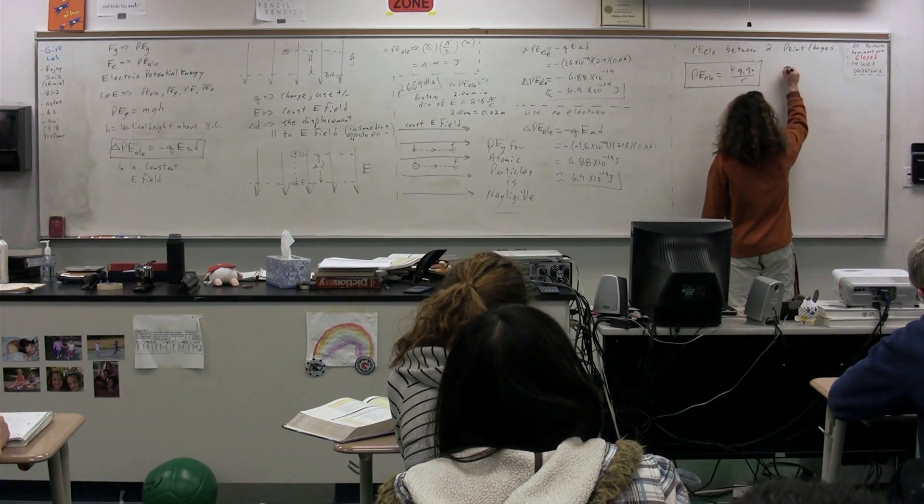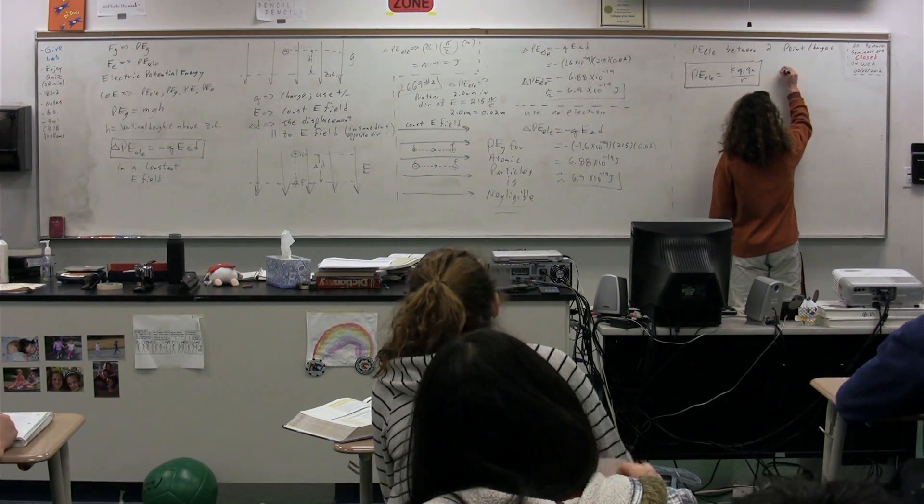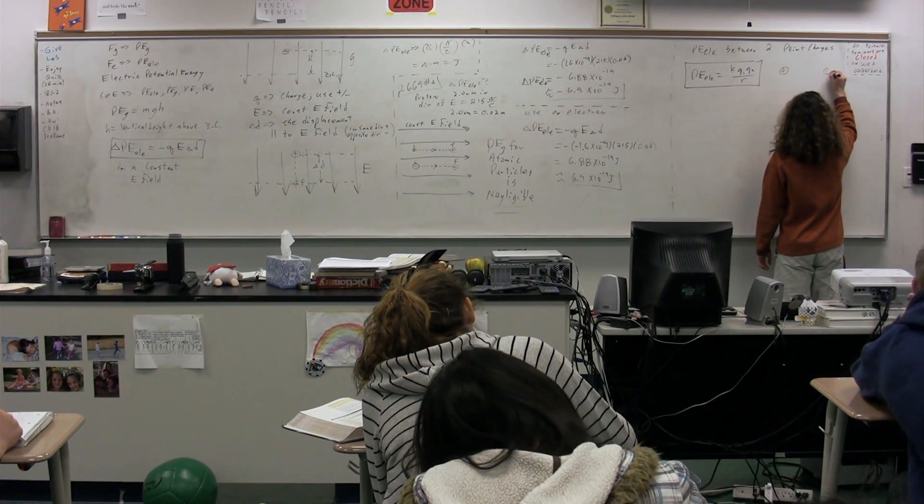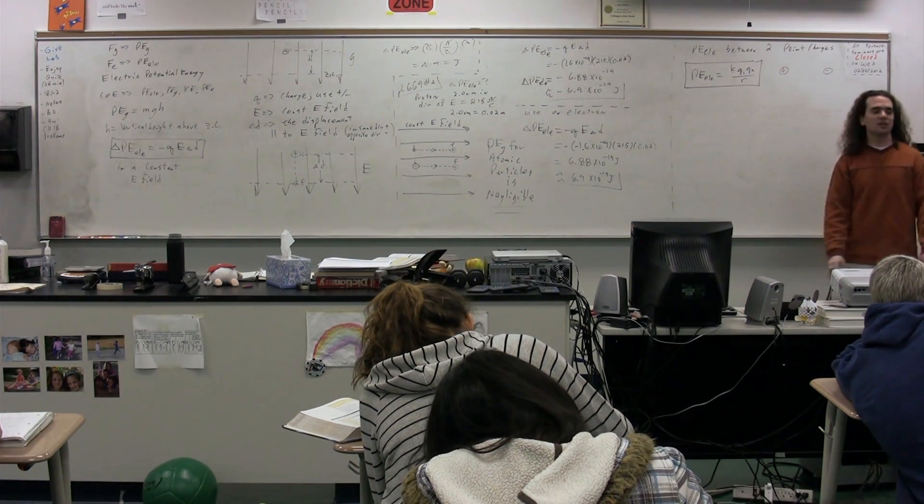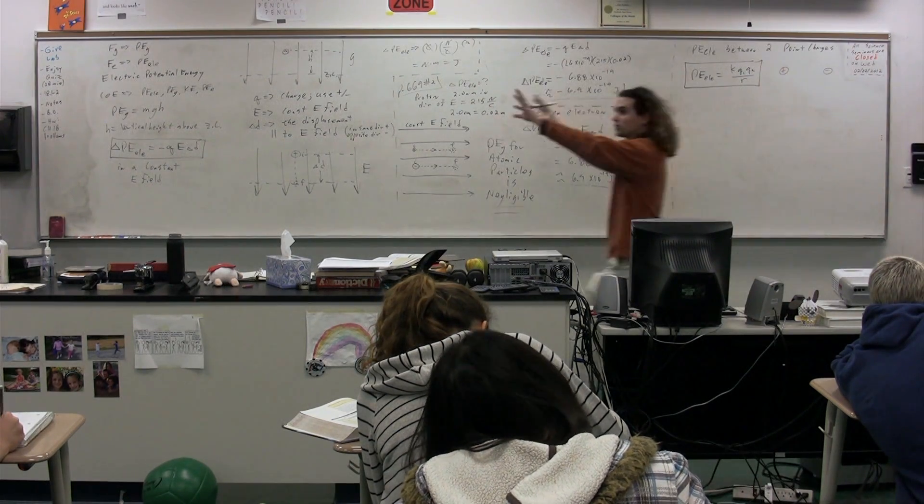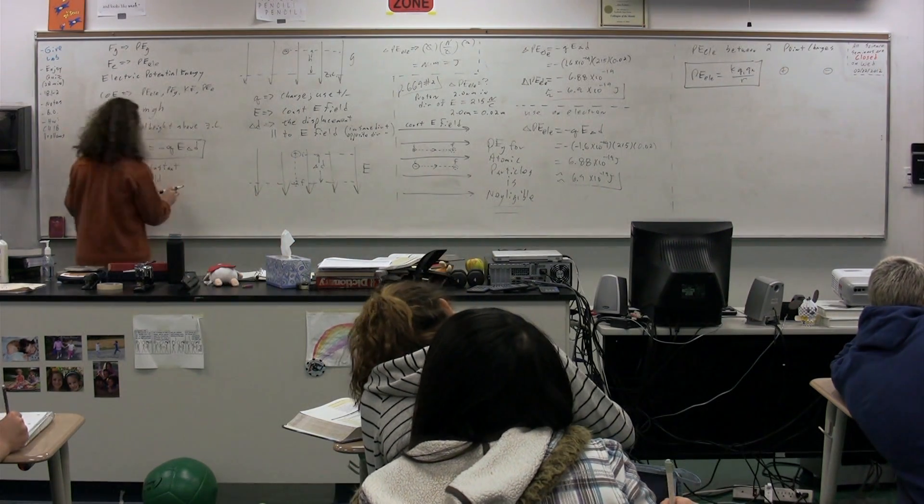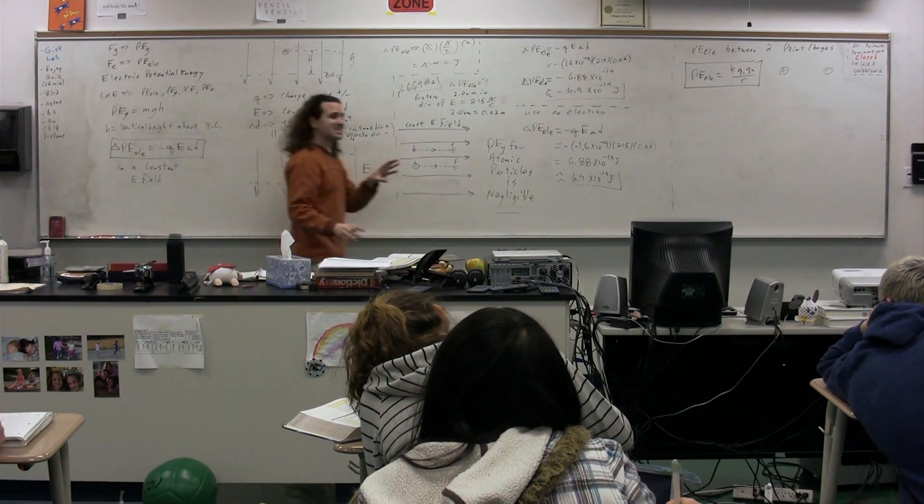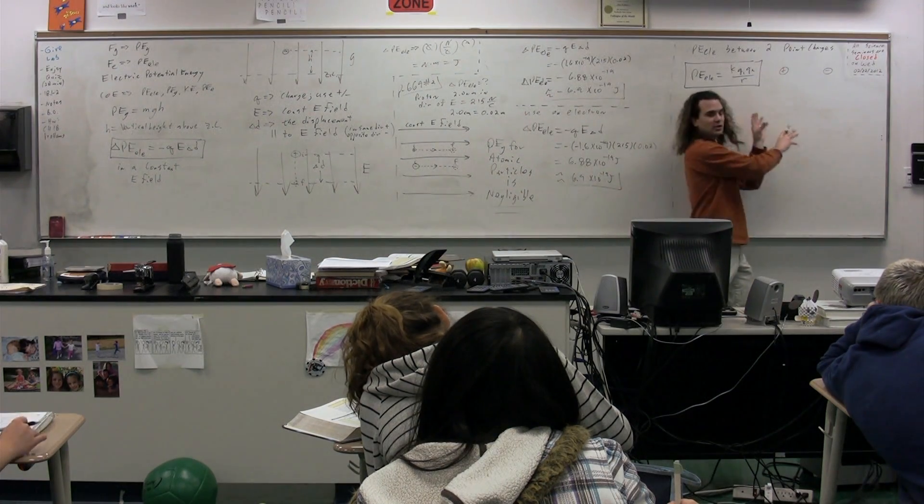So what's going on here is any time we have two charges, there is an electric potential energy that exists between these two charges. So notice, this equation was for the electric potential energy in a constant electric field. This is not a constant electric field, this is for point charges.